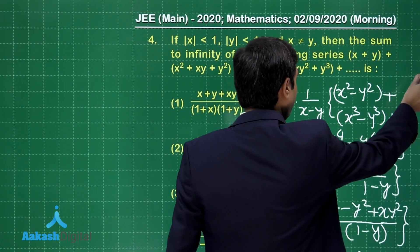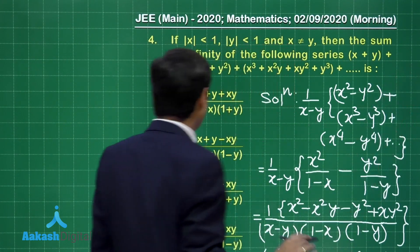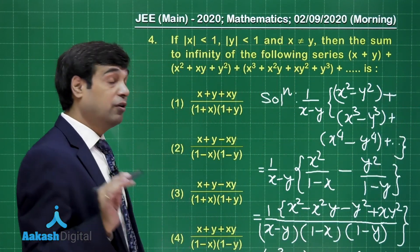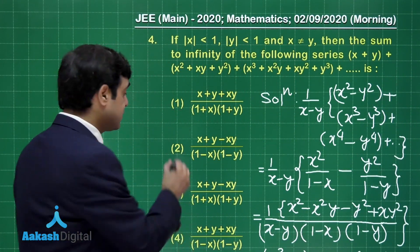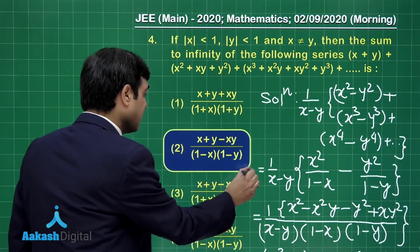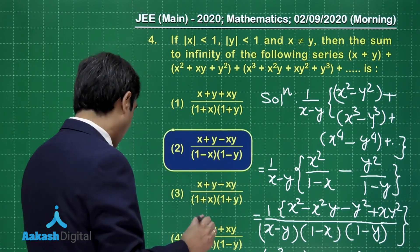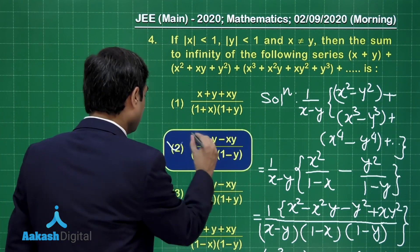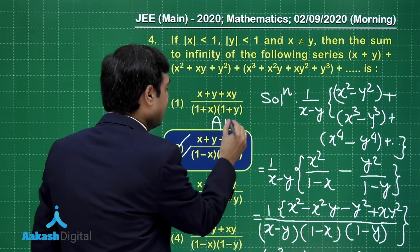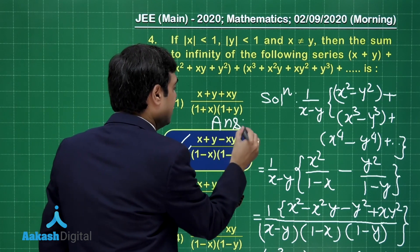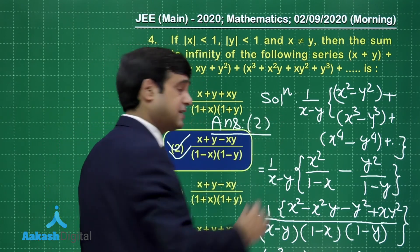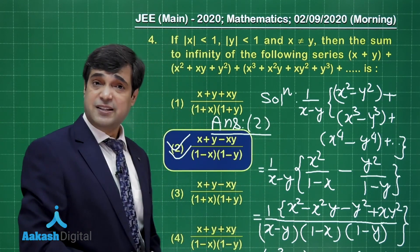Checking the options: (x plus y minus xy) upon (1 minus x)(1 minus y) is given as option number 2. So we mark option 2 as the correct choice.